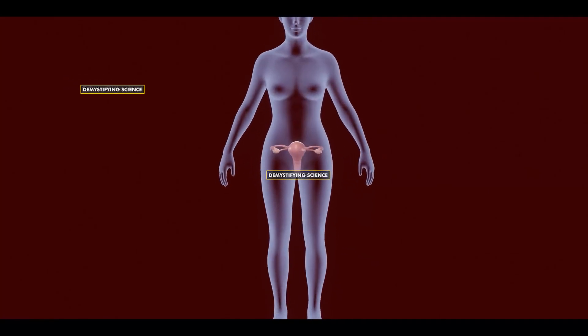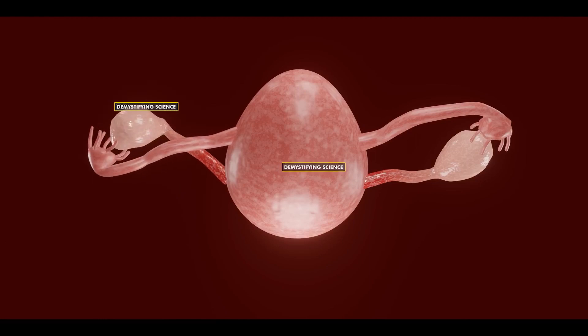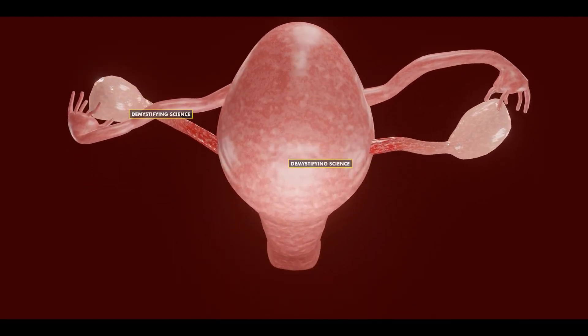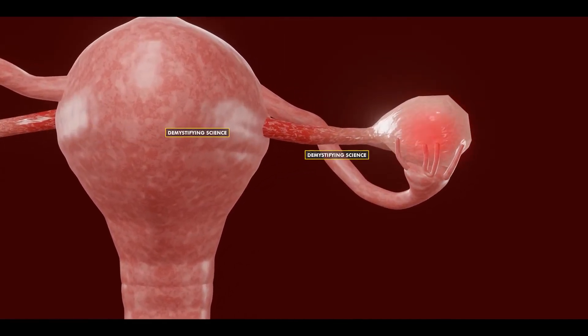Ovaries play a vital role in the female reproductive system. However, in ovarian torsion, the ovaries can become twisted around their supporting ligaments, causing a blockage in blood flow and resulting in painful swelling.